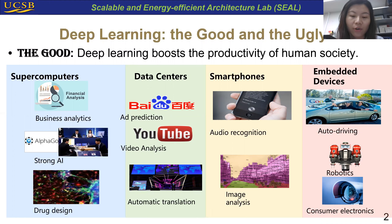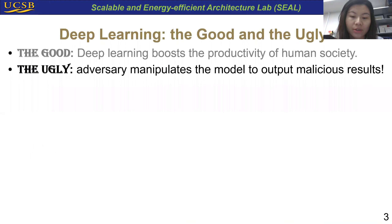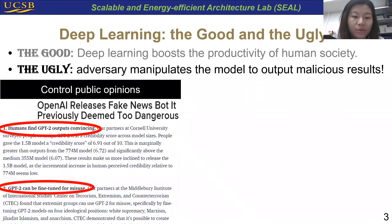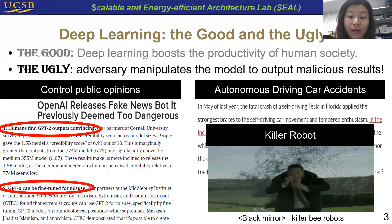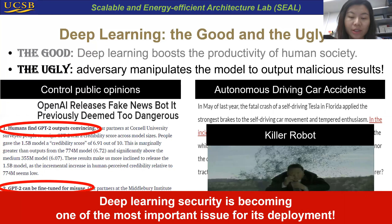The deep learning techniques are likely to be overwhelmingly beneficial for humanity, but we also believe that it's worth giving serious thought to potential challenges and risks. For example, the adversary may manipulate the data at the model to output malicious results — fake news bots may control public opinions, autonomous driving systems may be hacked, resulting in car accidents, or malicious robots may possibly come true in the future. Therefore, deep learning security is becoming increasingly important.